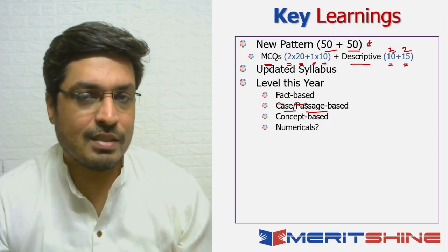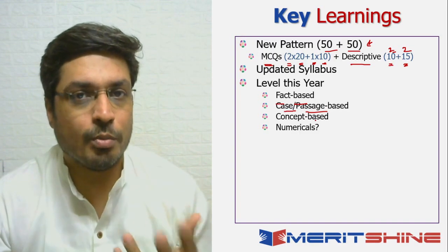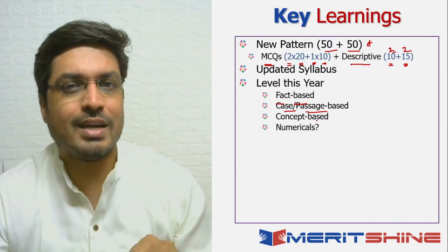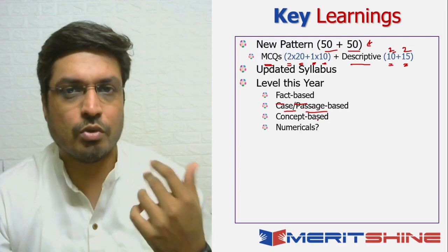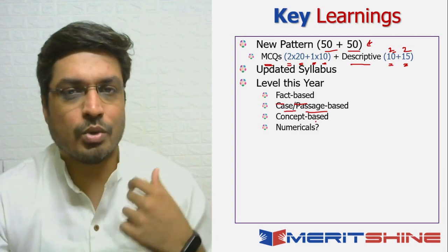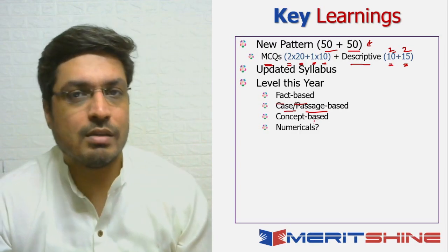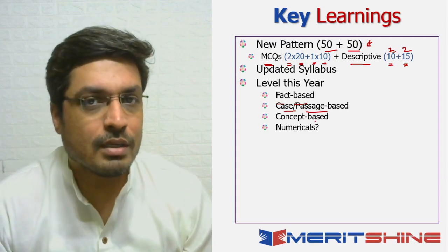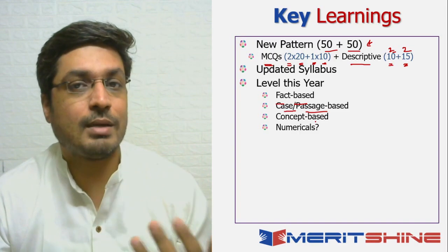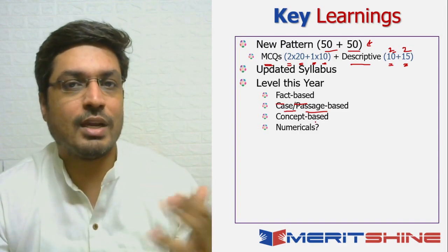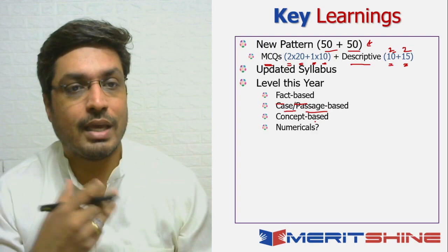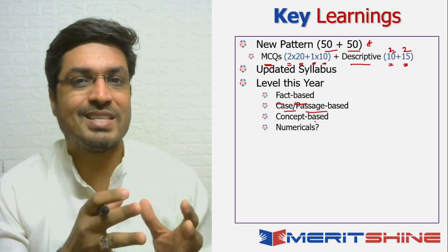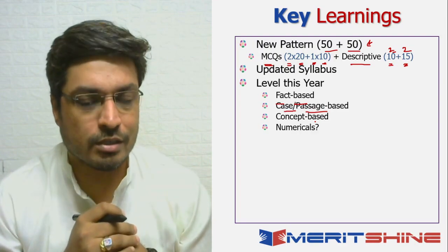Another thing missing this year — which has been missing for the last couple of years — was numericals. Technically, there was one concept-based question that you can't call a numerical since there was no real calculation involved. Does this indicate RBI doesn't want numericals? Not necessarily — they could come back next year. But they have not appeared in the paper for the last three years.